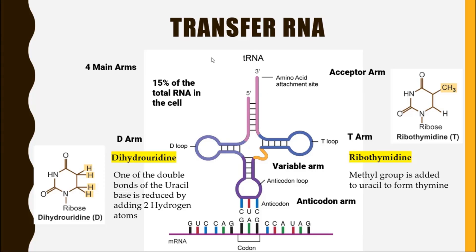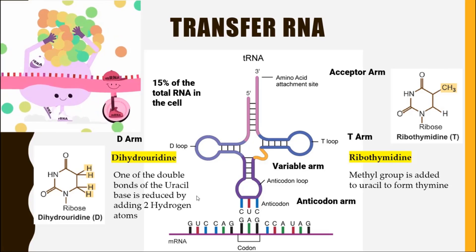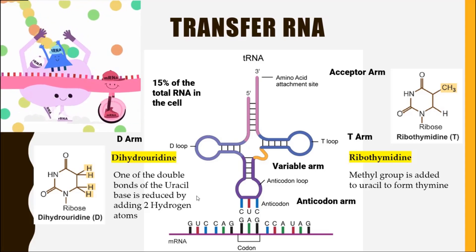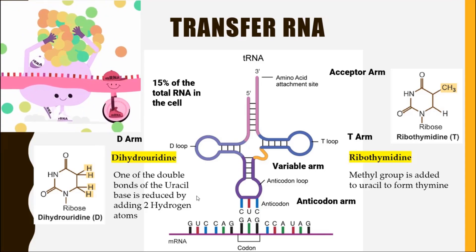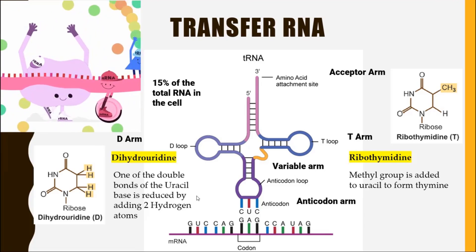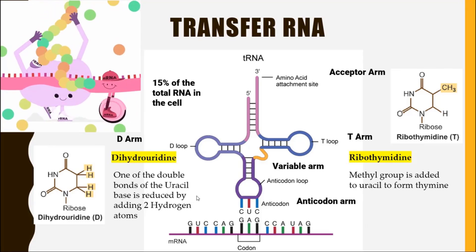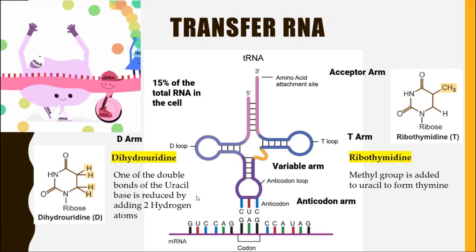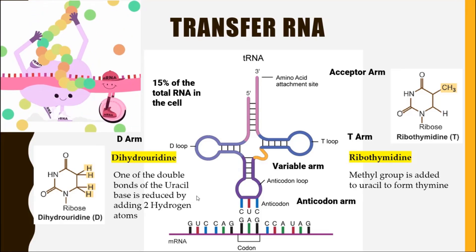There is a fifth arm present on transfer RNA called the variable arm. It is called the variable arm because the length of this arm changes at different locations. The overall function of transfer RNA is to read the messenger RNA and attach the complementary amino acid in the process called translation.